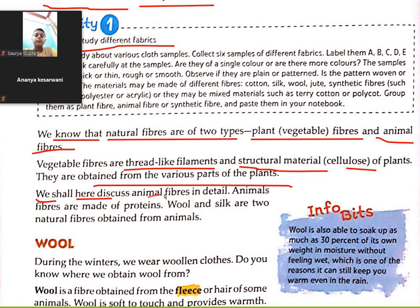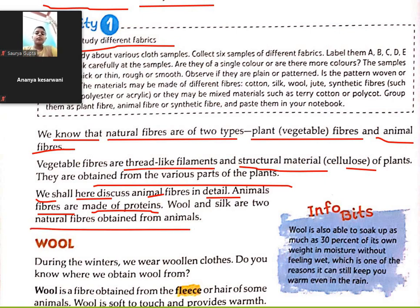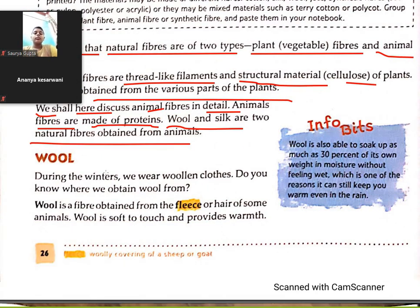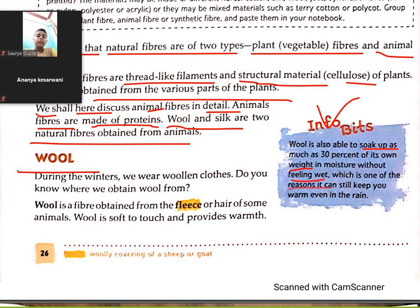In this chapter we will discuss animal fiber in detail. Animal fibers are made of protein. Wool and silk are two natural fibers obtained from animals. Wool is able to soak up as much as 30 percent of its own weight, which is one of the reasons it can still keep you warm.